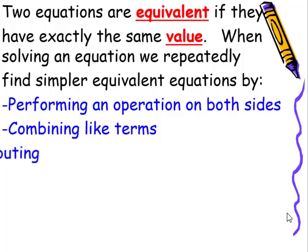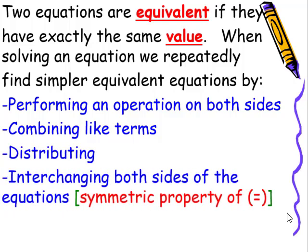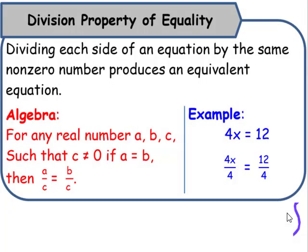Combining like terms, distributing, interchanging both sides of the equation, the symmetric property, and factoring. The division property of equality states that dividing each side of an equation by the same non-zero number produces an equivalent equation.